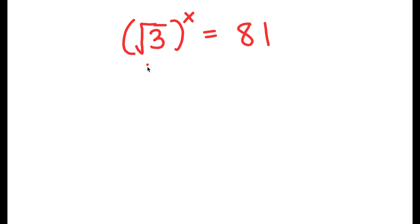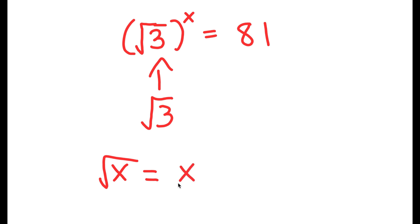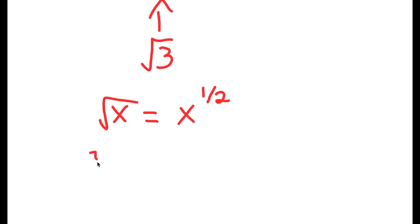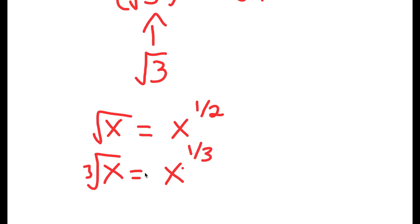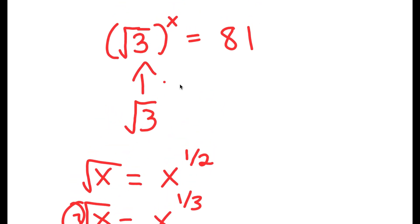Let's focus on the square root of 3. The square root of a number — say the square root of x — is the same thing as x to the power of 1/2, because the root here is 2, but we just don't write that. The cube root of a number is that number to the power of 1/3. So the square root of 3 can be rewritten as 3 to the power of 1/2.